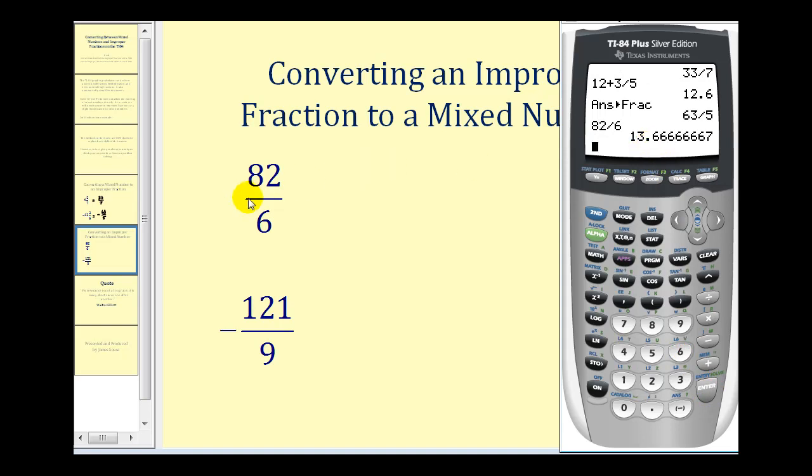But we want the mixed number, so there's a couple things to recognize. First we should recognize that the whole number of the mixed number is going to be thirteen. So our major concern is what does point six repeating represent as a fraction. Let's go ahead and subtract the thirteen, leaving just the decimal.